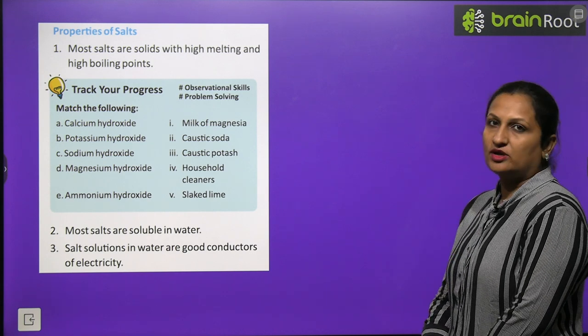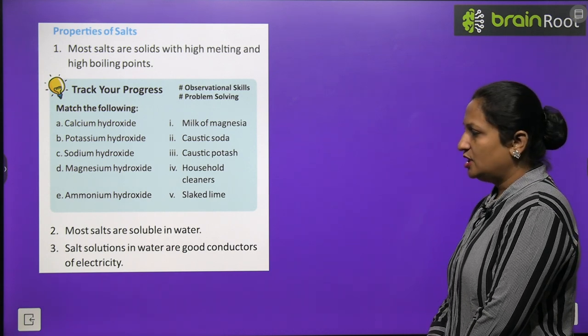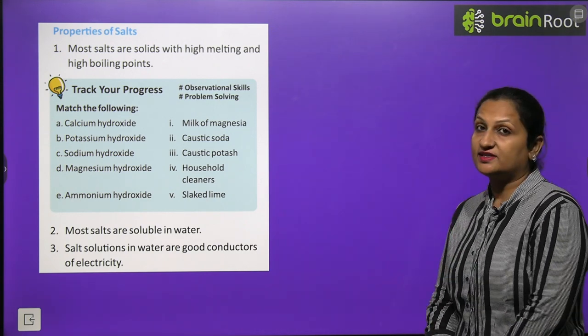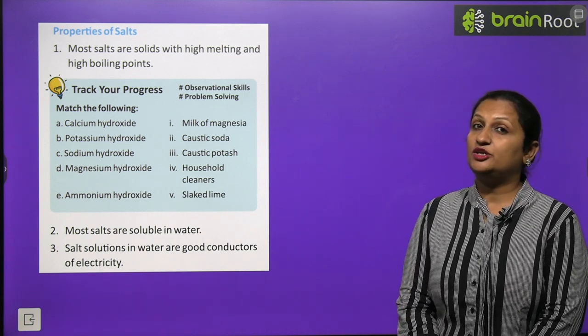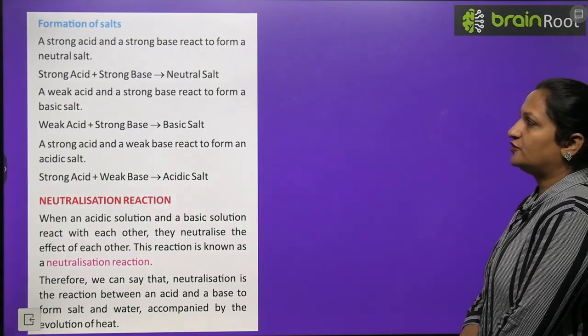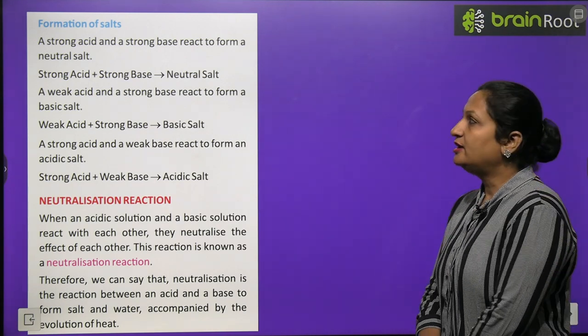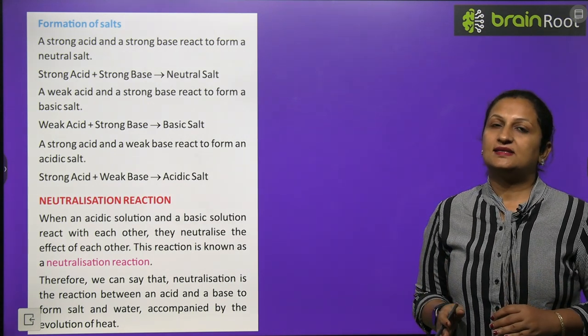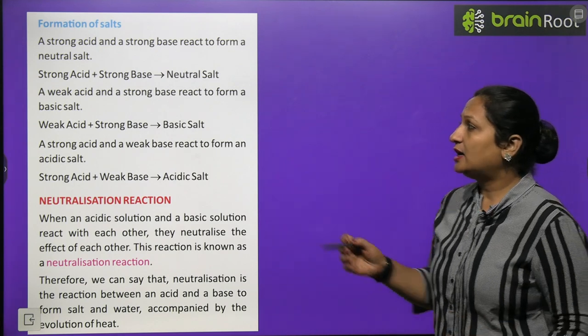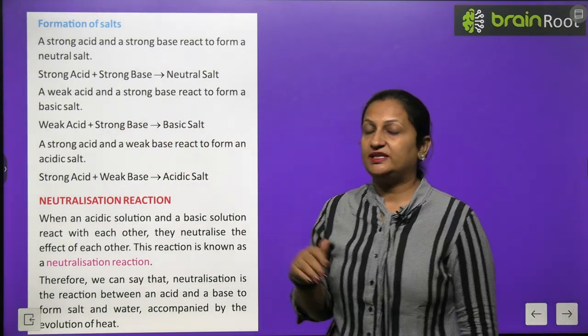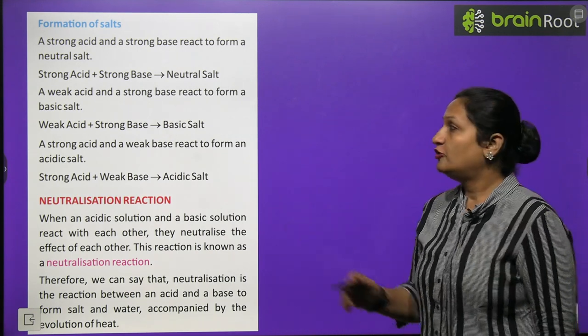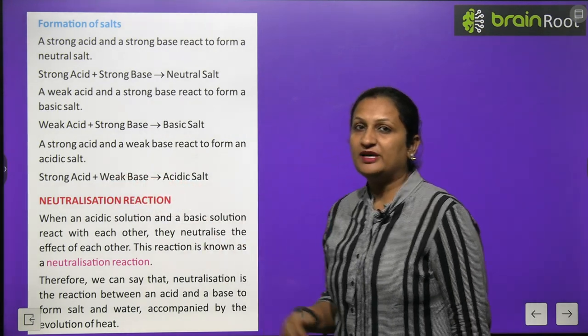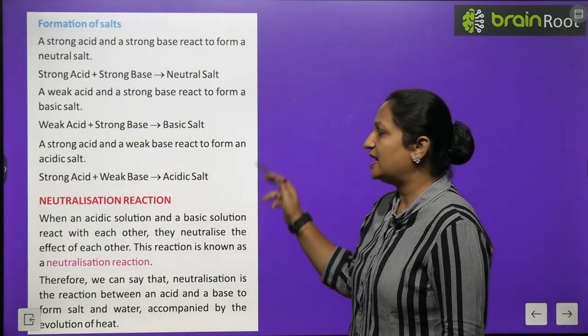Properties of salts: Most salts are solid with high melting and high boiling point. Most salts are soluble in water. Salt solution in water are good conductor of electricity. Therefore, we use it in electrolysis. Formation of salt: Three types of salts are formed. First is neutral salt. Neutral salt will be formed when a strong acid reacts with strong base. If we take weak acid and strong base, the salt formed will be basic salt. And when we use strong acid and weak base, the salt formed will be acidic salt.